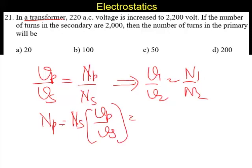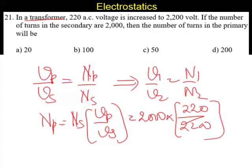Substituting Ns is 2000 into 2. Vp is 220 by 2200. So the answer is 200. Answer is B 200.